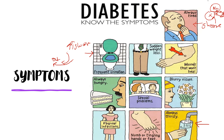The person can have blurry vision because whenever there is any change in the fluid levels of the body, the lens of the eye swells up, making the vision blurry. Other symptoms like numbness or tingling in hands or feet can occur due to neuropathy. As the vessels to the organs get damaged over time, it can lead to sexual dysfunctions like erectile dysfunction and loss of libido. And because the body is unable to produce energy, the person always feels hungry due to an energy debt in the body.